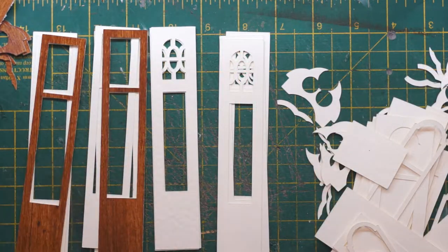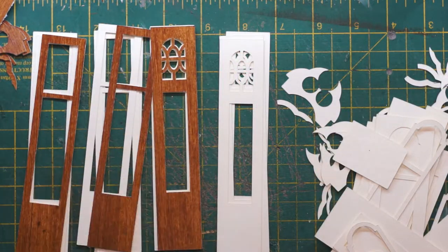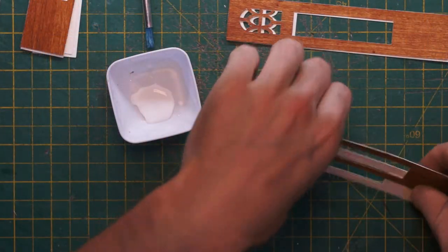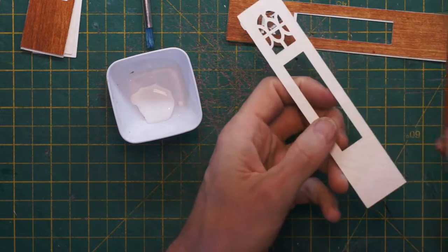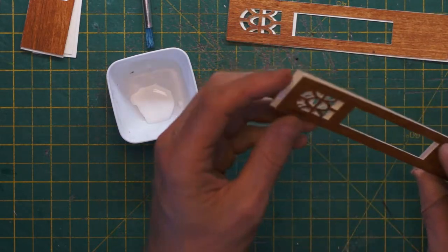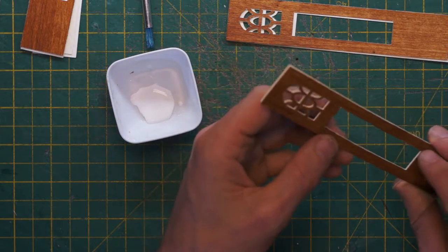Saving our faux veneer for the top layer. The side panels with the delicate window I'm only going to have two layers because I want that to be quite thin. I don't want the windows to look too deep.